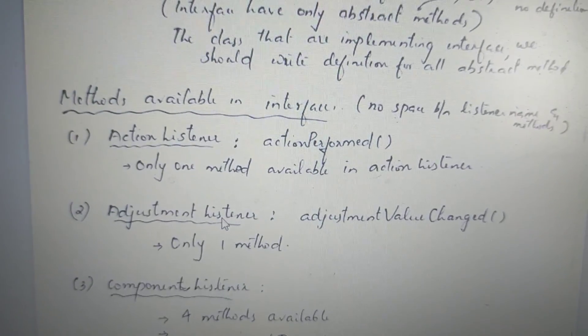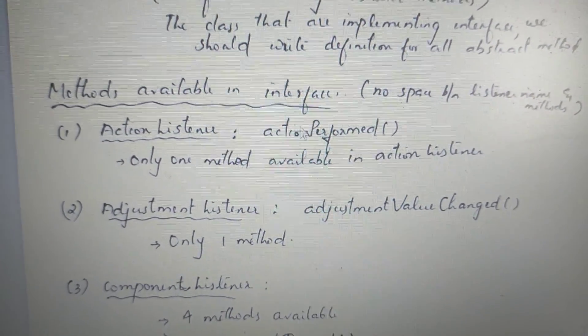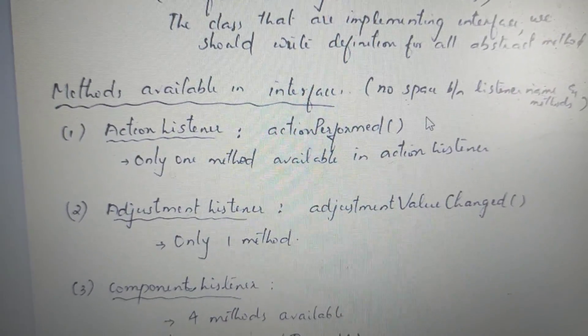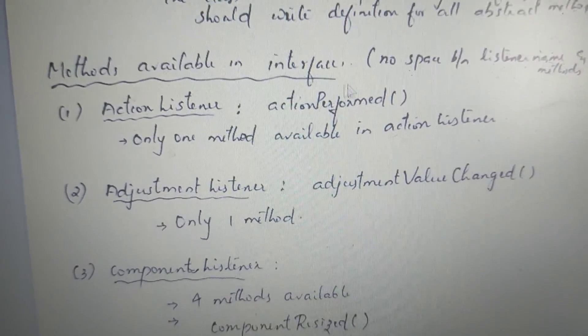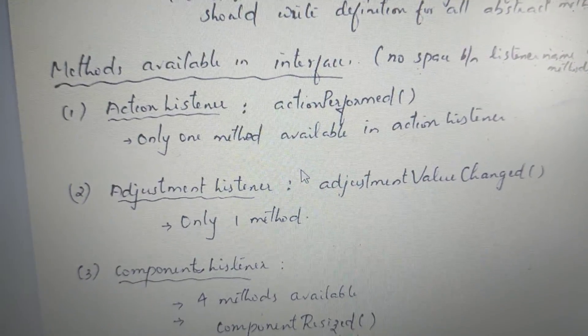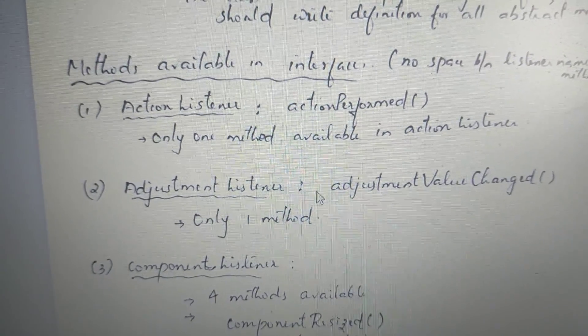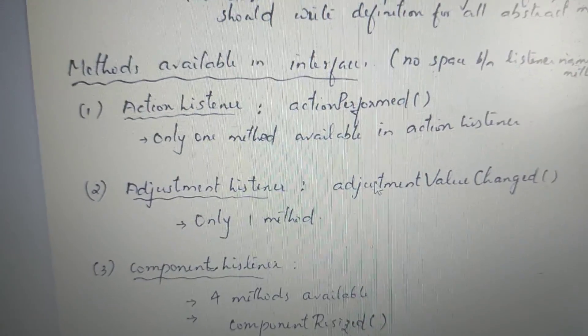The action listener has a method called actionPerformed. That method is available in this listener. For the adjustment event, the method is adjustmentValueChanged. In this method, the first word begins with a capital V and the second word begins with a capital C.